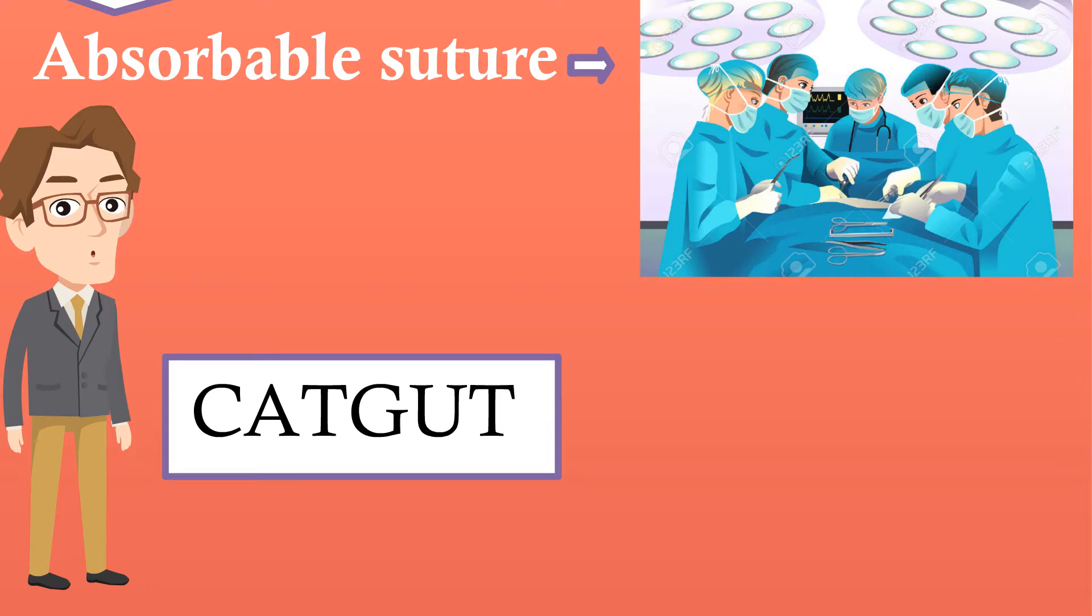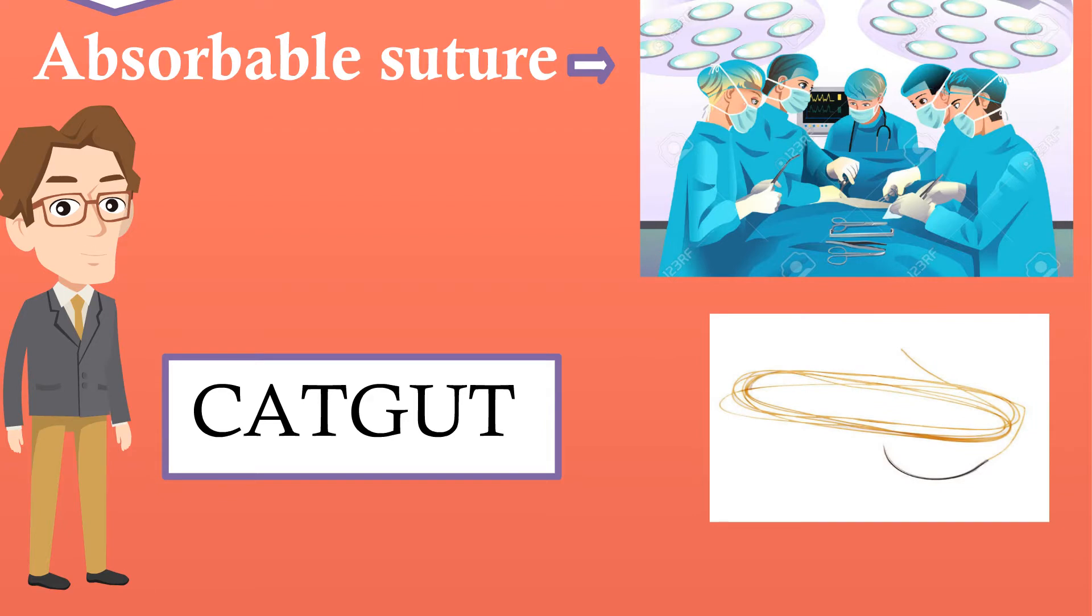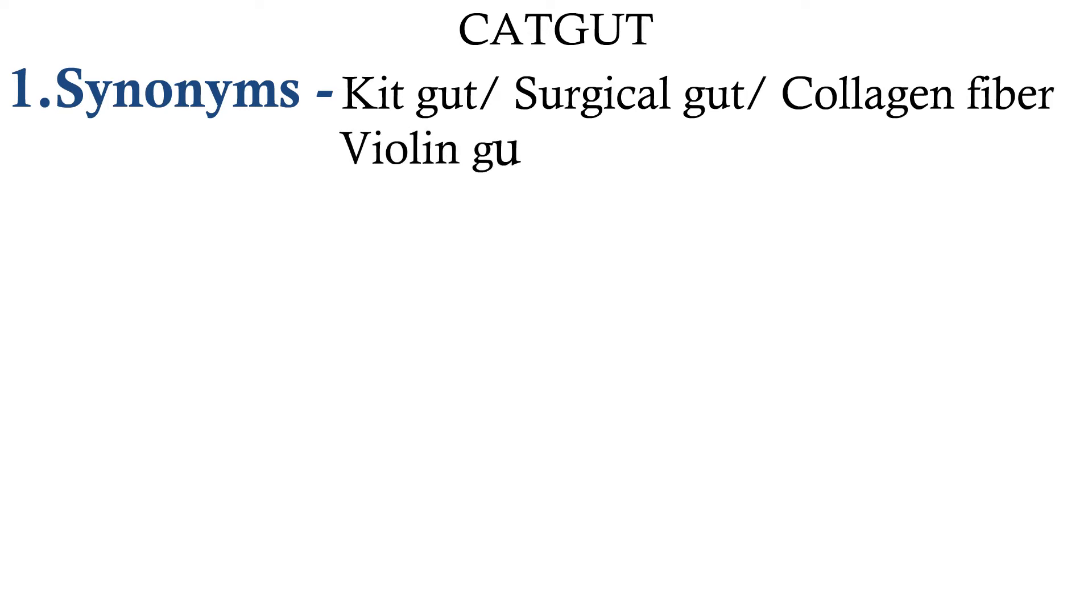Catgut, this is the most popularly used one. Let us discuss about catgut in this video. Synonyms: it is otherwise called as kitgut, surgical gut, collagen fiber, or vialing gut.